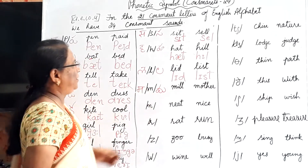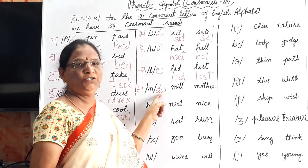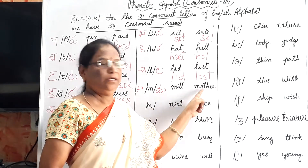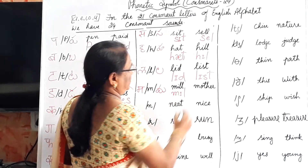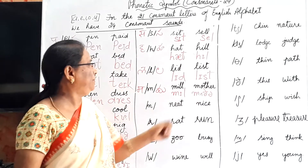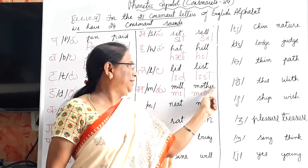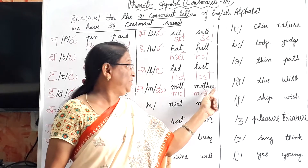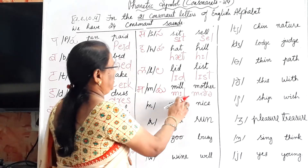M gives the /m/ sound. Mil, mother. The /m/ changes according to the vowel: ma, mi, mu. In 'mother,' this is a weak /ə/ and R is silent because a vowel occurs in front of R — when a vowel occurs in front of R, that R is silent.